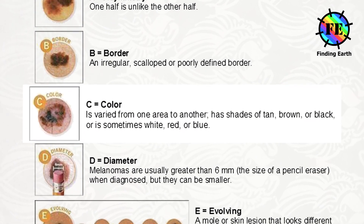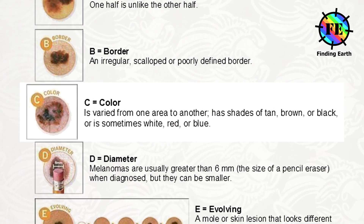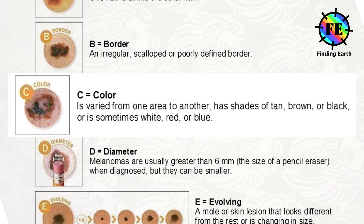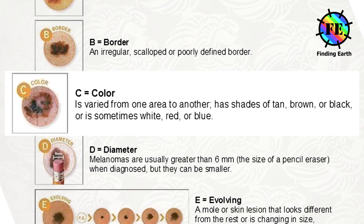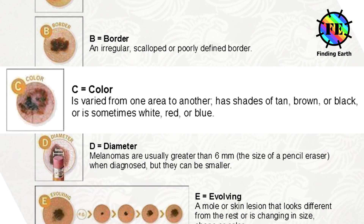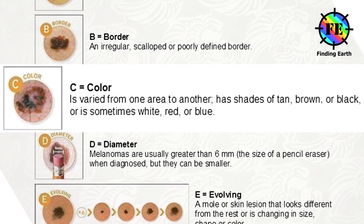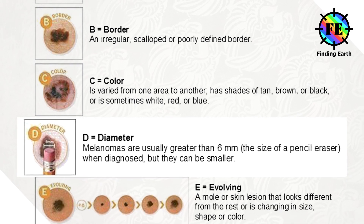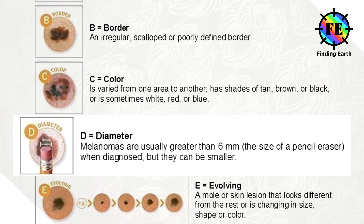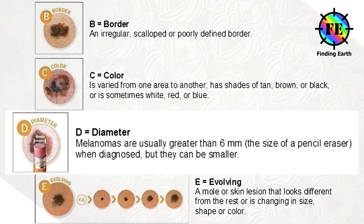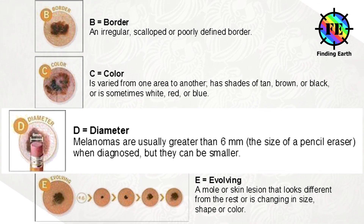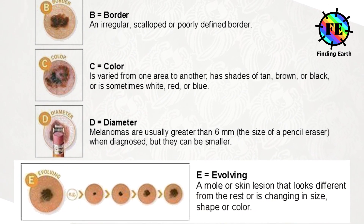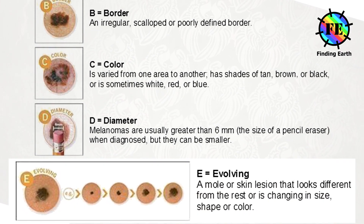C is for color: the color is not the same all over and may include shades of brown and black, or sometimes with patches of pink, red, white, or blue. D is for diameter: the spot is larger than 6 mm across, although melanomas can sometimes be smaller than this. E is for evolving: the mole is changing in size, shape, or color.